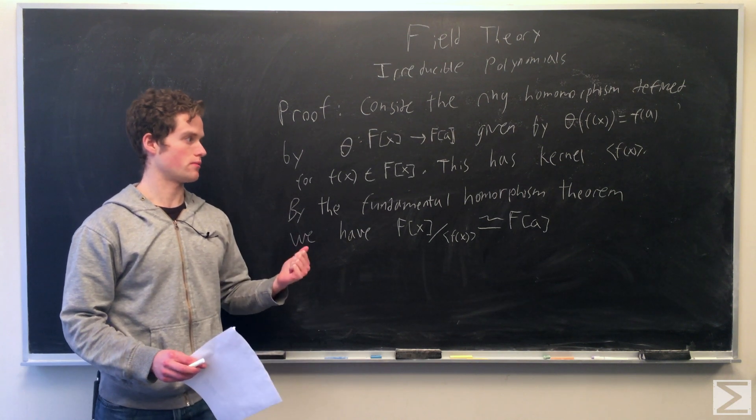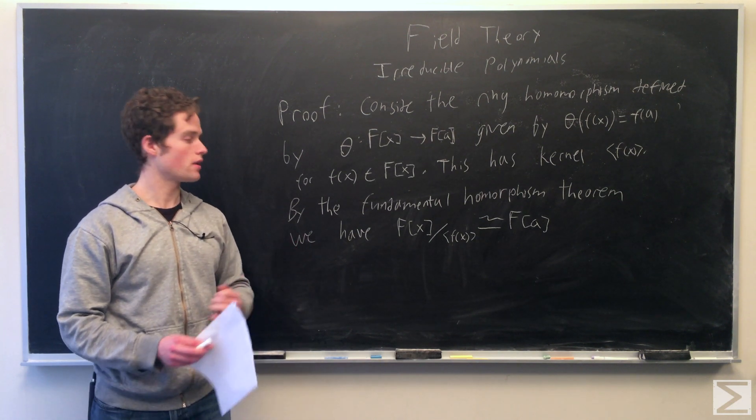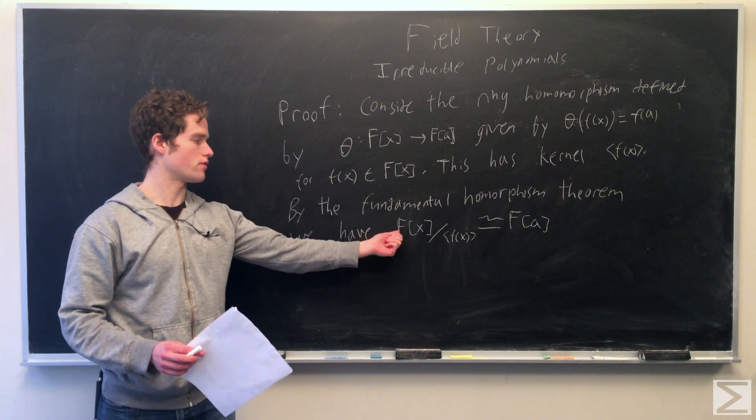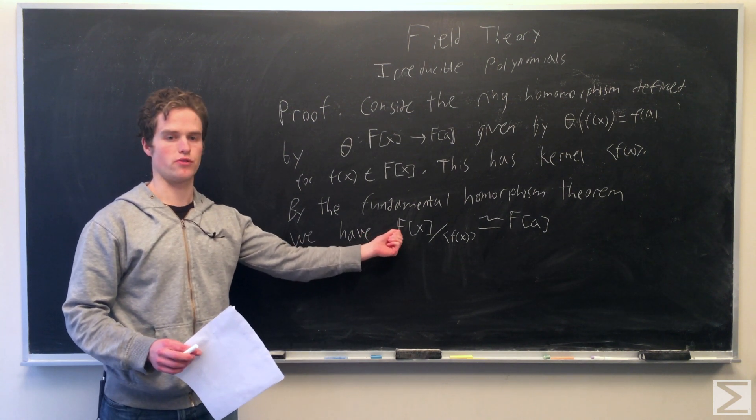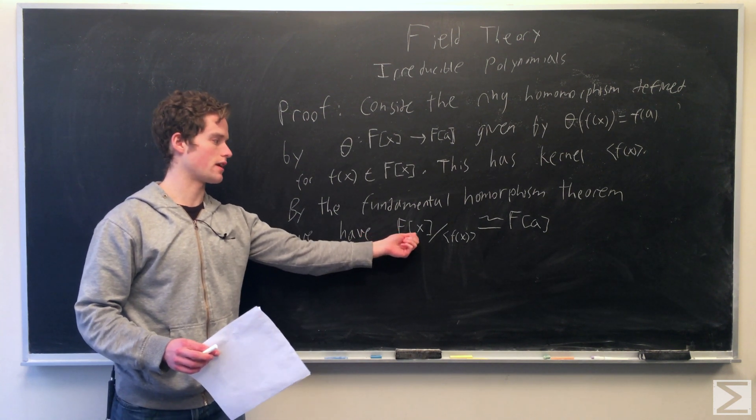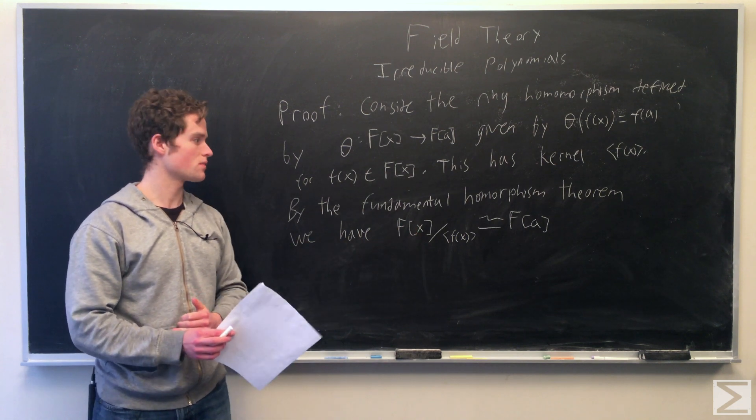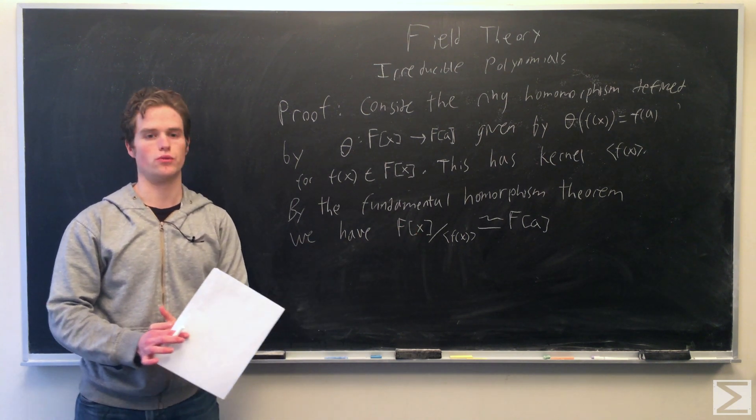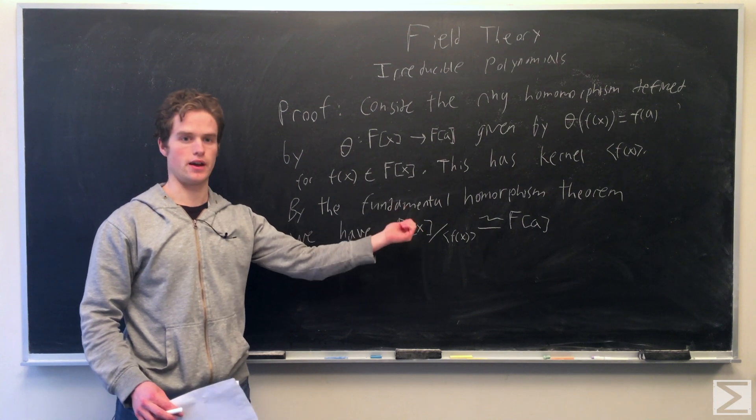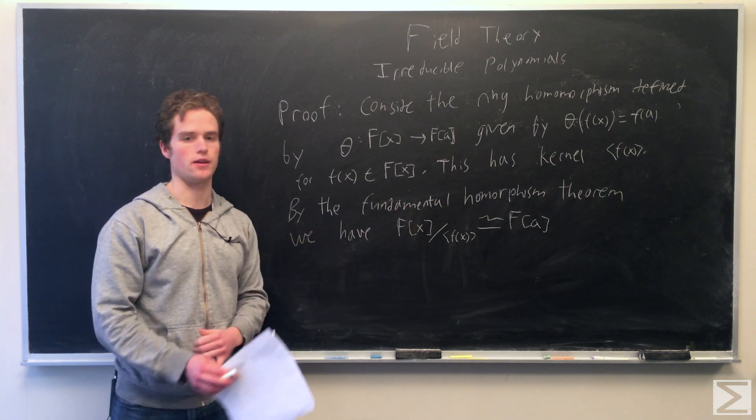And so by the fundamental homomorphism theorem, we have big F, the polynomial ring with indeterminate x modulo f of x, is in fact isomorphic to our ring, which we now know is a field F with a adjoined.